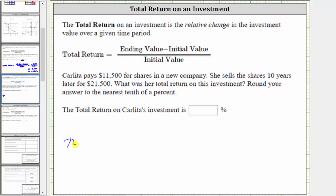So again, the total return is equal to this quotient here, where in the numerator, we have the ending value minus the initial value. The ending value was the sell price 10 years later of $21,500, minus the initial value, which was the purchase price of $11,500. And then we divide this difference by the initial value, which again was the purchase price of $11,500.